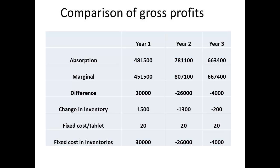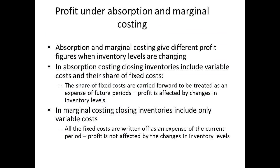Where do these figures come from? The answer is found by looking at the inventory. In marginal costing the inventory is valued at $123, whilst in absorption costing it is $143 per unit. The difference is $20. We take the change in inventory of 1,500 units and multiply by the difference between the costing methods. We get the figure of $30,000, which is the difference in gross profits. We can apply the same calculation in years 2 and 3. The fixed cost in inventory accounts for the difference. The differences in gross profits occur when the inventory levels are changing, since the inventory for absorption costing includes variable costs and the share of fixed costs, whilst the value of inventory for marginal costing only includes the variable cost.